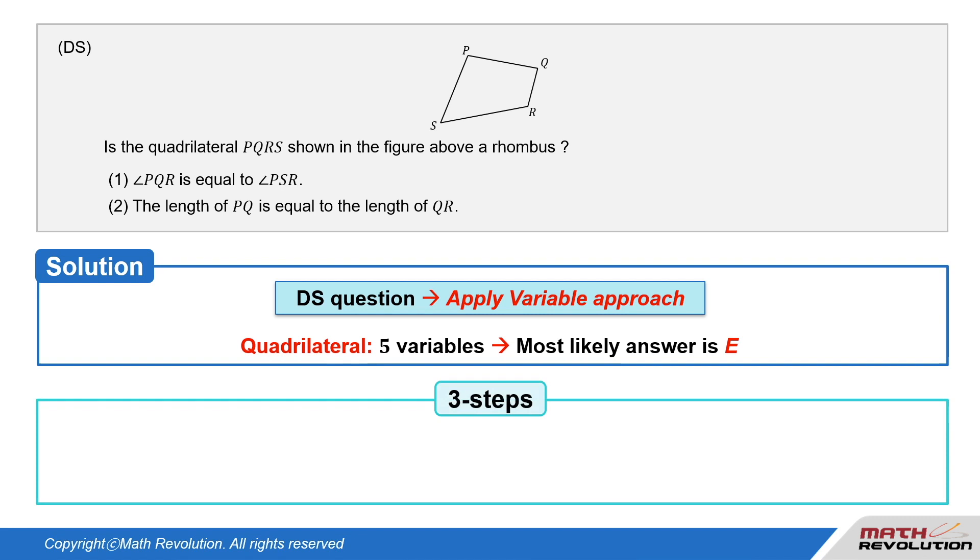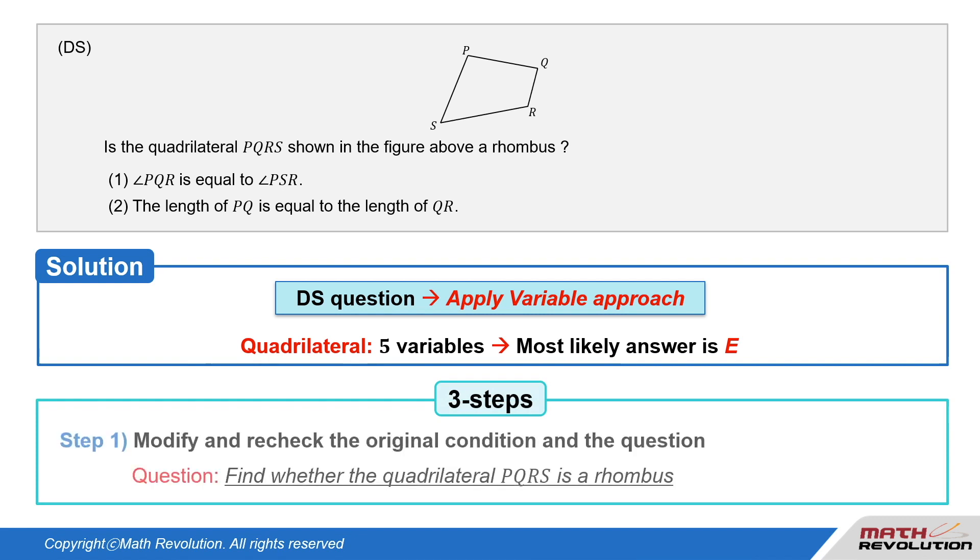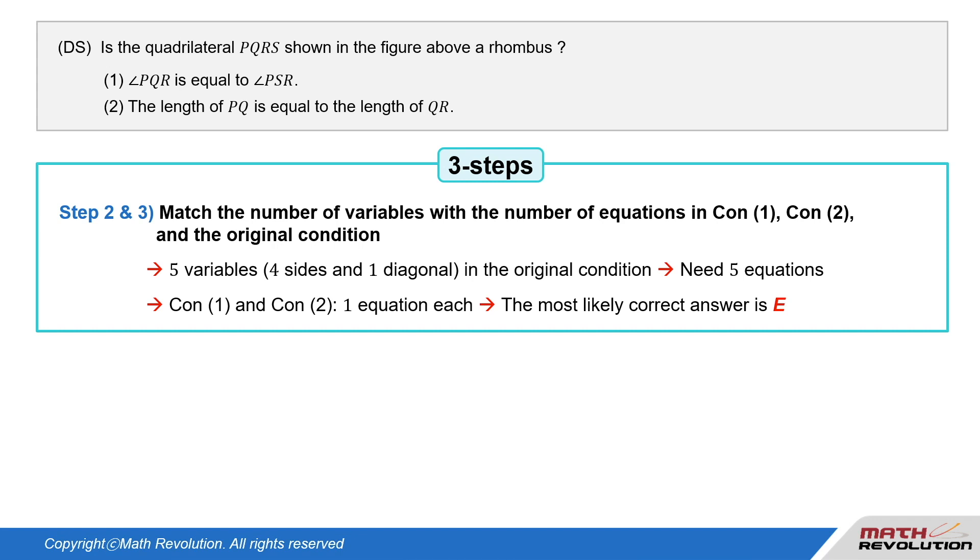Let's apply the three steps suggested previously. Follow the first step of the variable approach by modifying and rechecking the original condition and the question. We have to find whether the quadrilateral PQRS is a rhombus. Let's modify the original condition and the question.